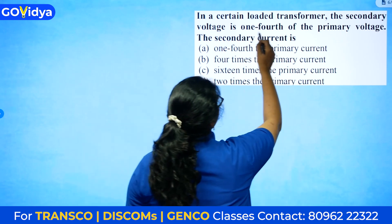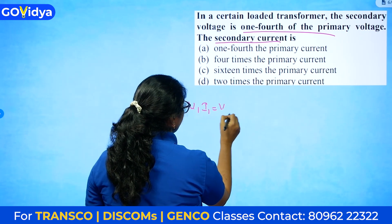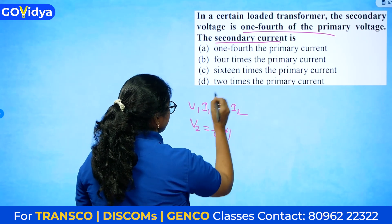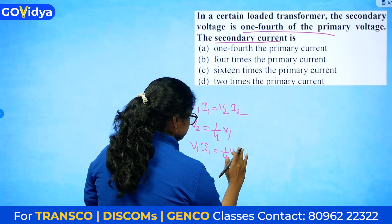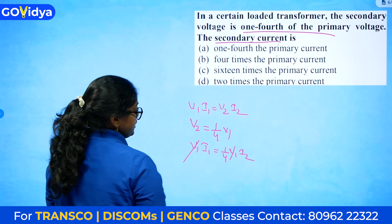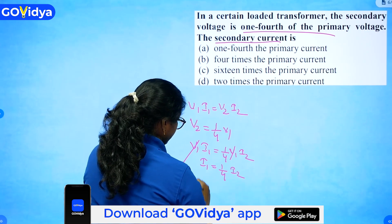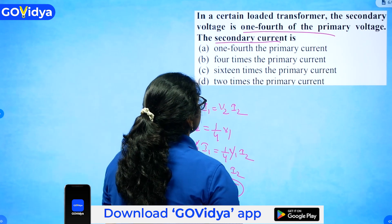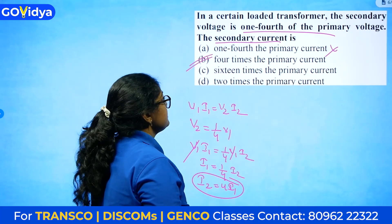Question 5: In a loaded transformer, the secondary voltage is 1/4 of the primary voltage. What is the secondary current? We know V1·I1 = V2·I2. Since V2 = (1/4)V1, substituting gives I2 = 4·I1. So the secondary current is 4 times the primary current. Option B matches.